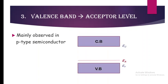Considering the conduction band and valence band, the acceptor level lies just above the valence band. The acceptor level has a number of holes — holes are deficit of electrons — and the valence band contains a number of electrons. Under this transition the electron is going to get thermally excited.